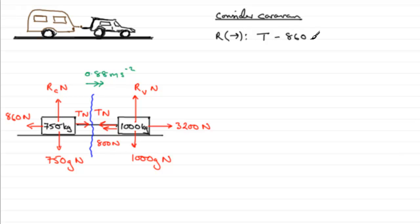The weight 750g newtons, they're perpendicular to the direction that we're resolving, so they won't enter the equation. This resultant force equals the mass times the acceleration. The mass is 750 and the acceleration is positive, so multiply by 0.88.